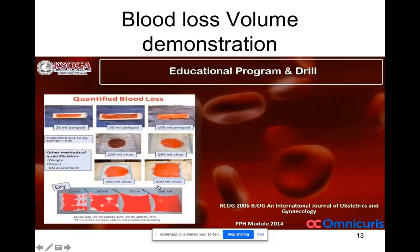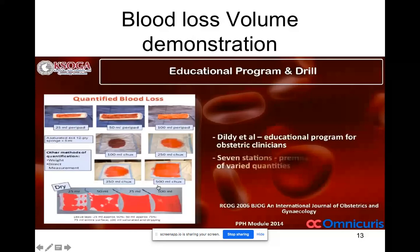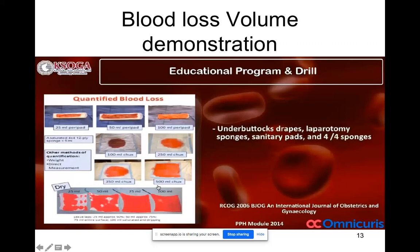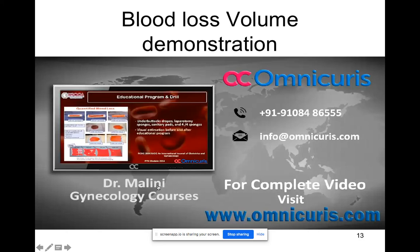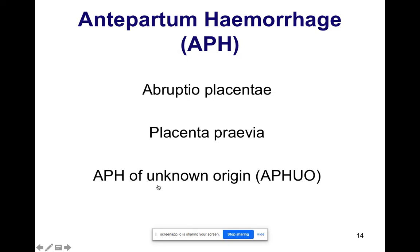For standardized visual estimation, an education program and drill is required. Dildy et al. have developed this education program for obstetric clinicians. Seven stations are set up with pre-measured whole blood of varied quantities to estimate blood loss, using buttocks drapes, laparotomy sponges, sanitary pads, and four-by-four sponges. Visual estimation is done before and after the education program. We now move to antepartum hemorrhage.